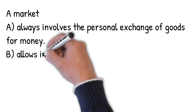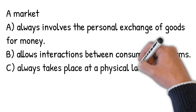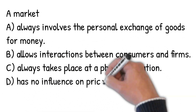Does a market always involve the personal exchange of goods for money? No — sometimes it does not involve money. Does it allow interactions between consumers and firms? Yes. Does it always take place at a physical location? No — it can take place on the internet. Does it have no influence on price? No — the interactions between firms and consumers can influence price.